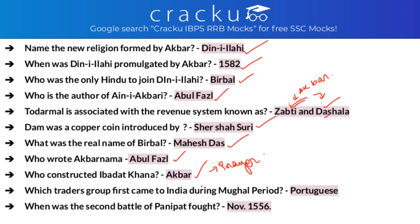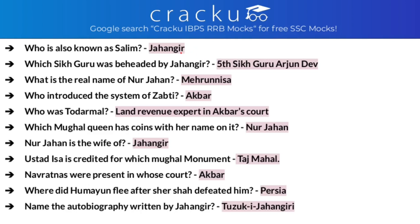Which trader group first came to India during the Mughal period? It was the Portuguese. The Second Battle of Panipat was fought in November 1556. Who was also known as Salim? It was Jahangir, the eldest son of Akbar. Which Sikh Guru was beheaded by Jahangir? It was the fifth Sikh Guru, Guru Arjan Dev. What is the real name of Nur Jahan? It is Meher-un-Nissa. Who introduced the system of Zabt? It was introduced by Akbar. Todarmal was a land revenue expert and one of the Navratnas of Akbar.